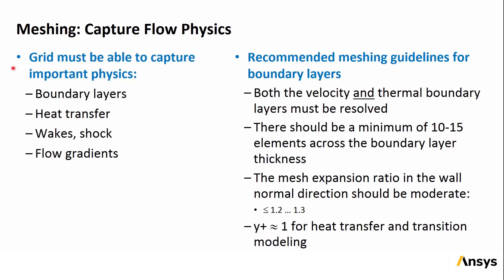When you create the mesh, it should be fine enough to capture and resolve important physics such as boundary layers, heat transfer, wakes, shockwaves, and any high gradients in the flow. Specifically for boundary layers, when a well-resolved solution is needed, both the velocity and thermal boundary layers should be considered. The normal guideline is to have at least 10 to 15 elements across the thickness of the boundary layer, with an expansion or growth ratio of no more than 1.2 to 1.3, although 1.3 is already pretty high.